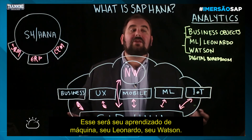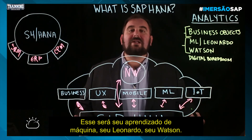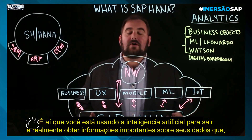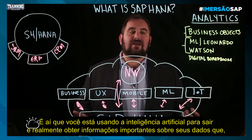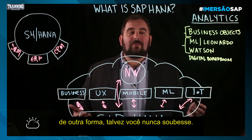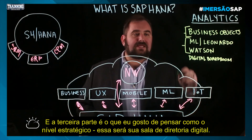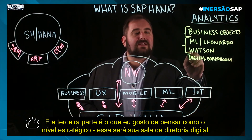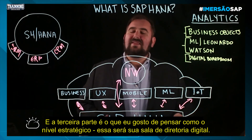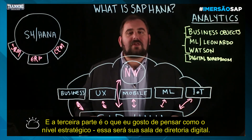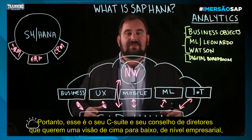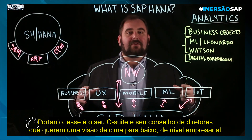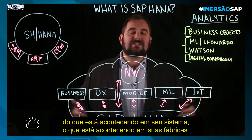The second piece is what I consider the enterprise level — that's your machine learning, your Leonardo, your Watson. That's where you're using artificial intelligence to go out and actually gain important insight into your data that you might otherwise never discover.